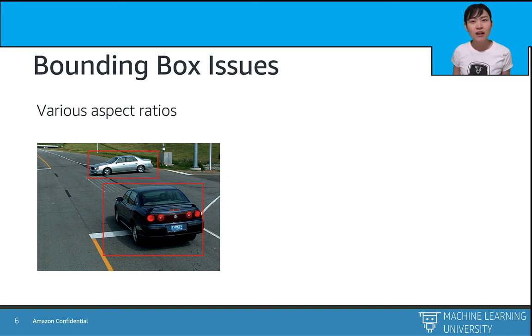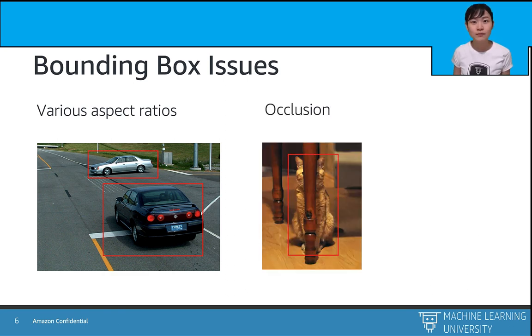Second, we may find there is one object hidden behind another one, which we call the occlusion problem. To tackle these problems, researchers invented the anchor box.